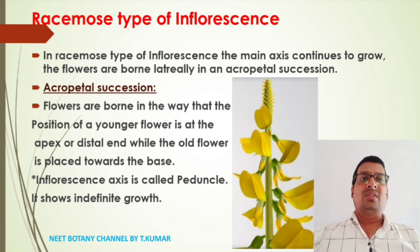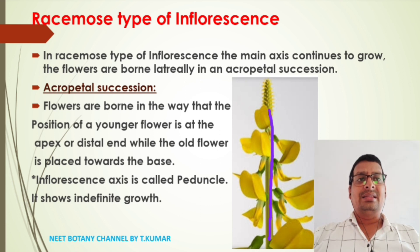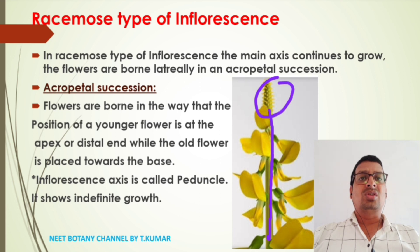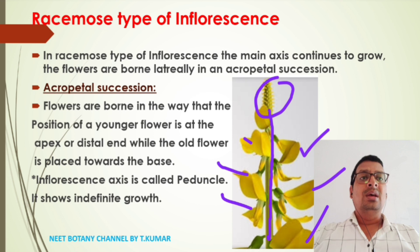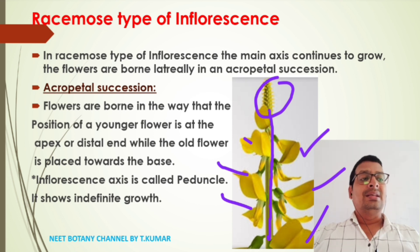In racemose type of inflorescence, the main axis continues to grow and the flowers are borne laterally in acropetal succession.